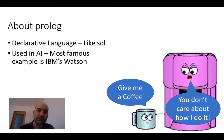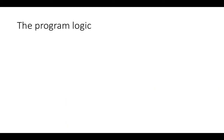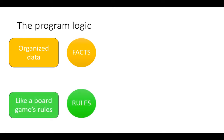It's used in artificial intelligence. The most famous example is IBM's Watson supercomputer. So the program logic. On one side you've got organized data which are called facts and like a board game you've got rules.